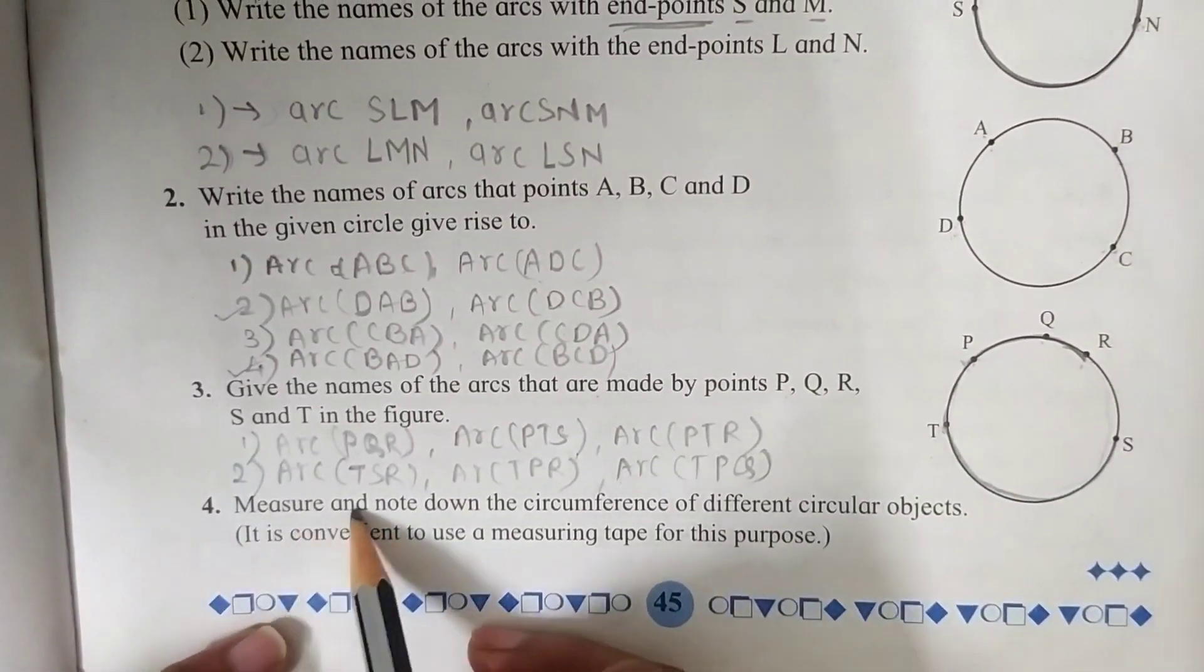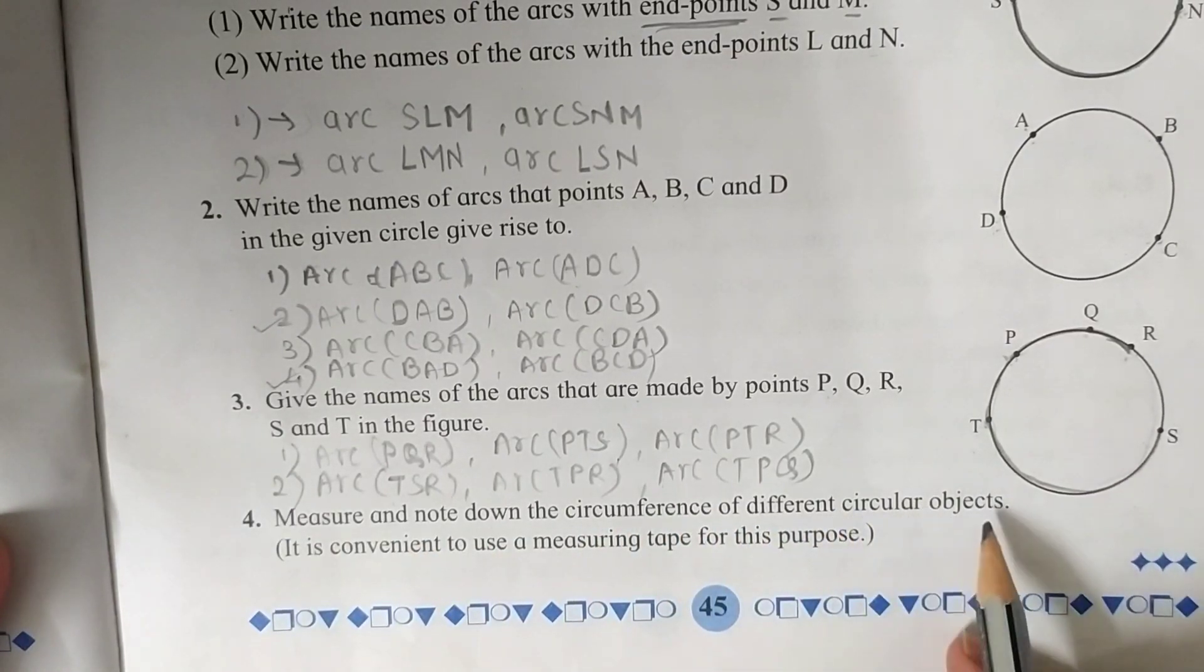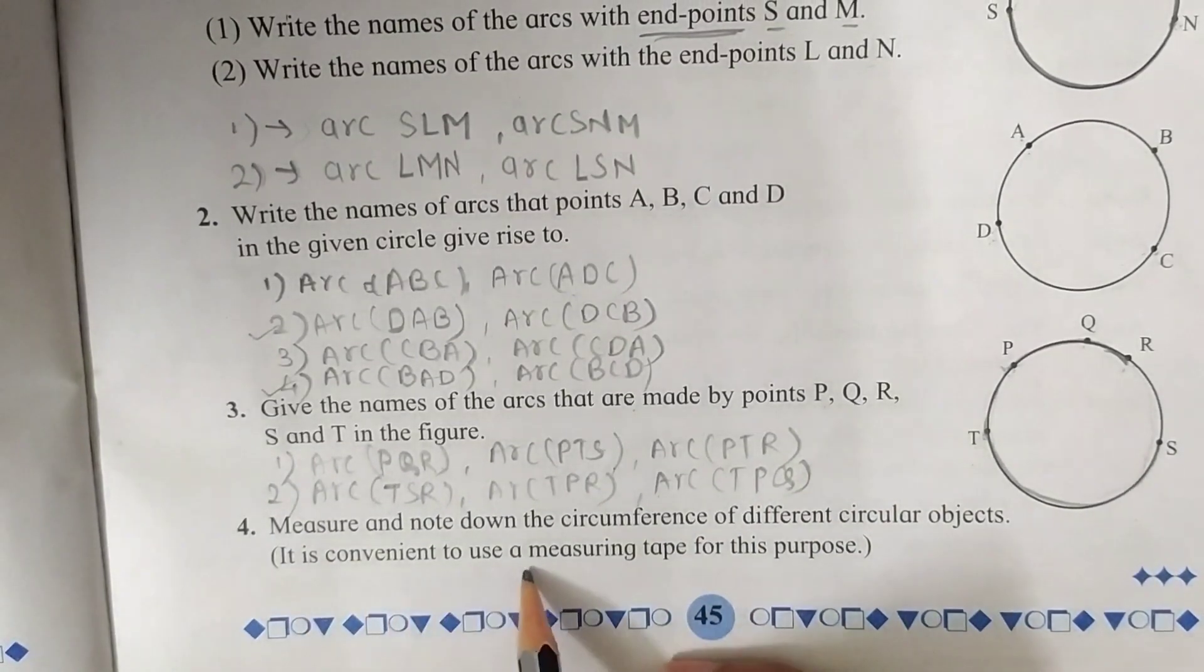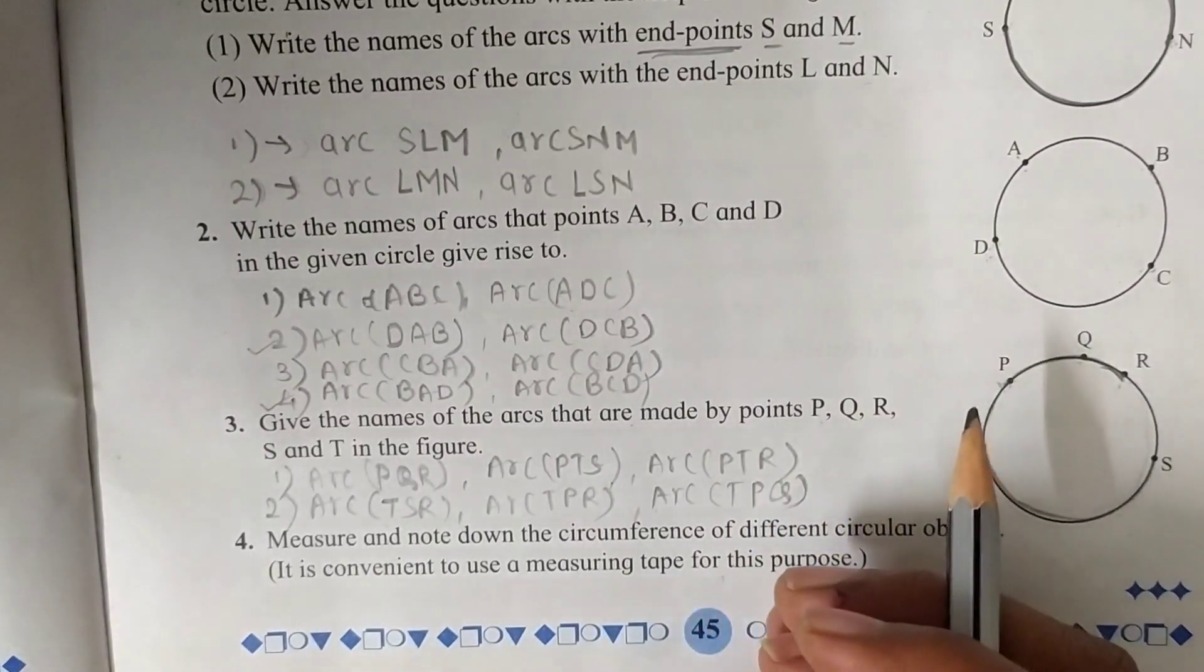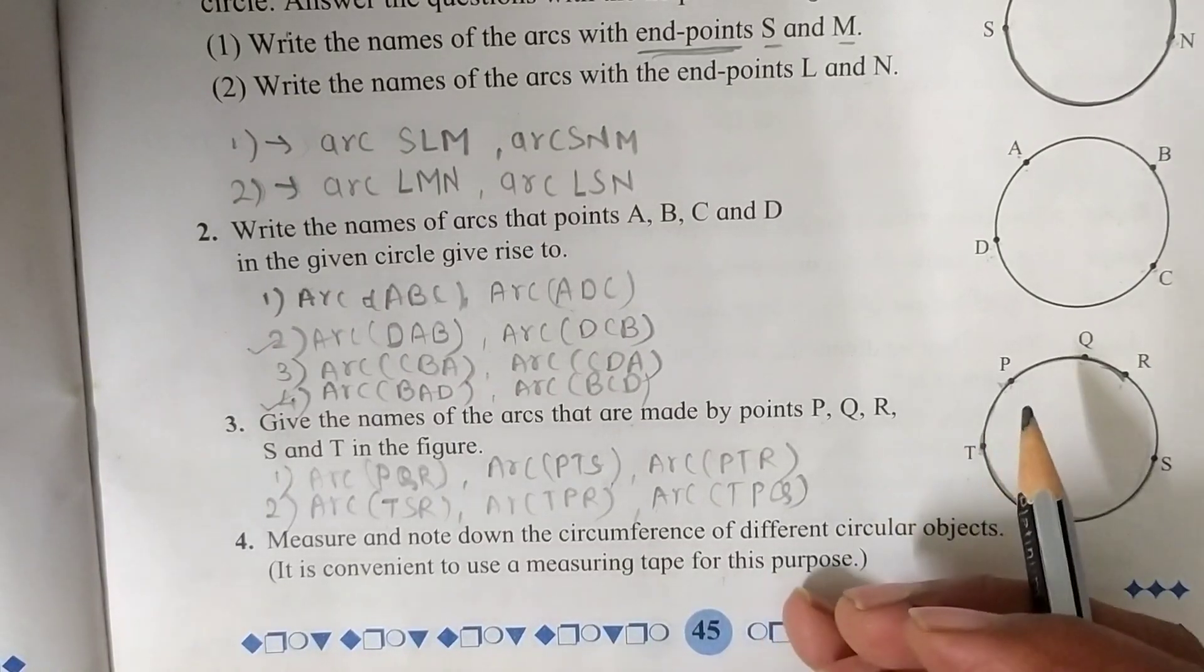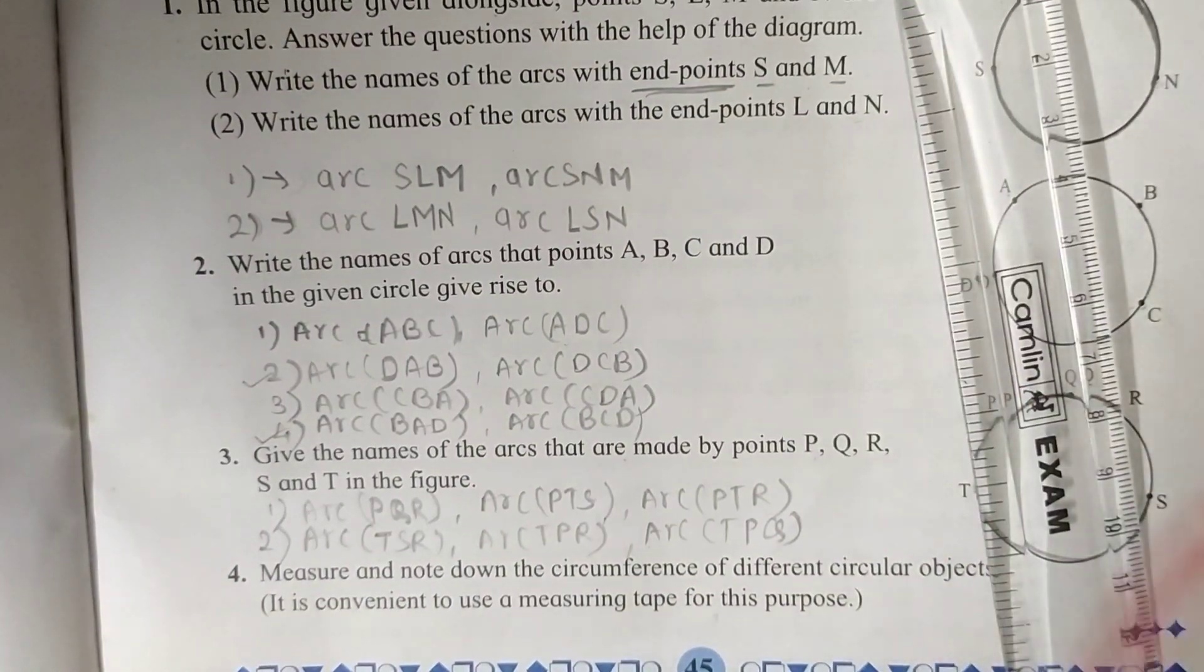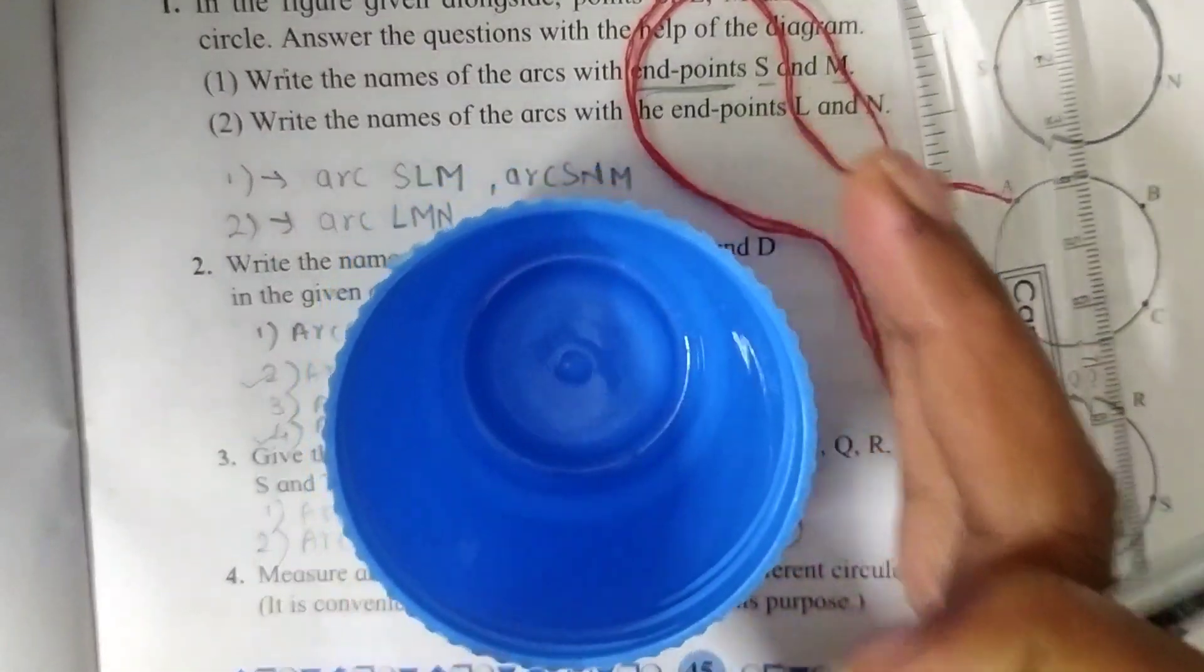Now the fourth question is measure and note down the circumference of different circular objects. It is convenient to use a measuring tape for this purpose. So if you have a measuring tape, you can use it and if you don't have a measuring tape, you can use your ruler, a scale, then a thread and circular objects like this.